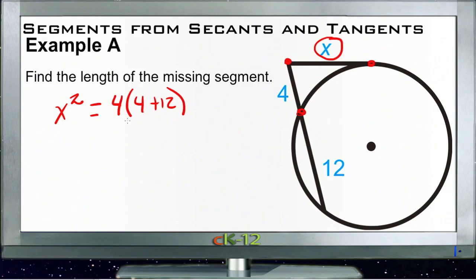So we're going to have x squared is equal to 4 times 4 which is 16, plus 4 times 12 which is 48. So x squared, and then 16 plus 48 would be 64.